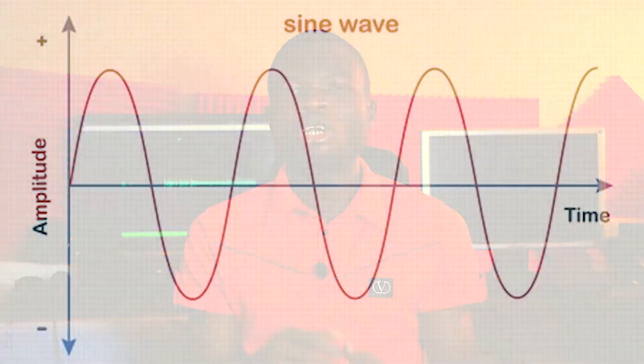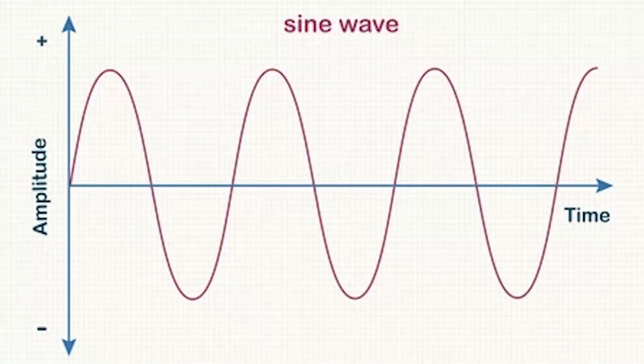What does clipping mean? In elementary physics, you are taught that sound is represented as a sine wave. A good audio signal should have a normal sine wave — that is, you have the crests and the troughs, the high notes, the peaks, those points where the amplitude is high and where it is lowest. That's a normal audio signal.